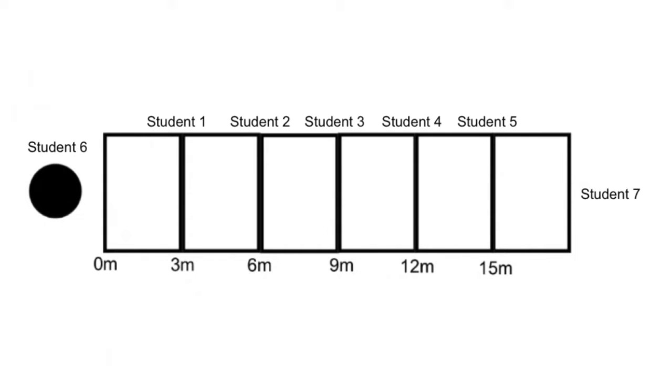Designate a sixth person to be in charge of releasing the ball. Locate a seventh person beyond the last timer to stop the ball. Designate an eighth person to collect the data from all timers.